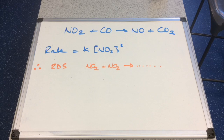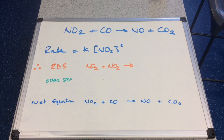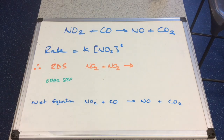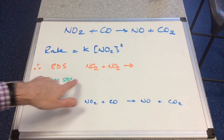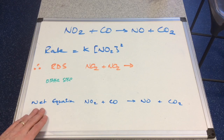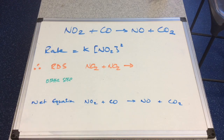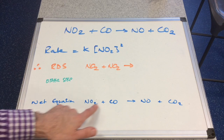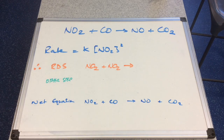At A-level you will only be expected to write two-step mechanisms. I'd advise setting it out with your rate determining step first, leaving space for the other step underneath, and then writing the net equation at the bottom. It's a bit like simultaneous equations — the two steps that make up the mechanism need to add up and form the overall equation.